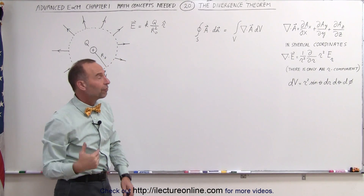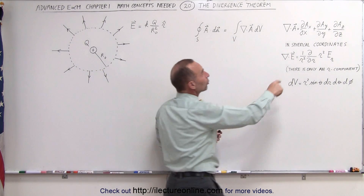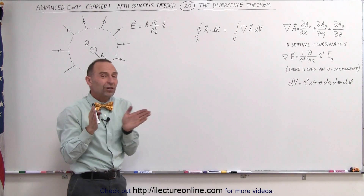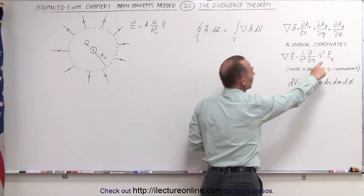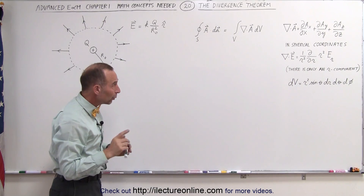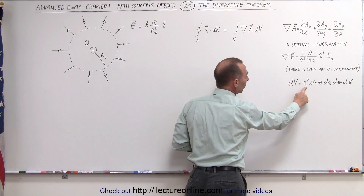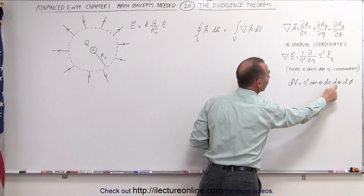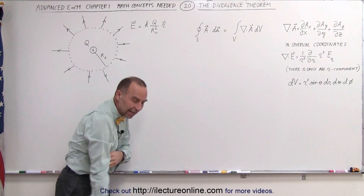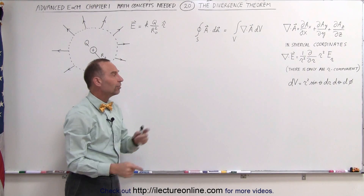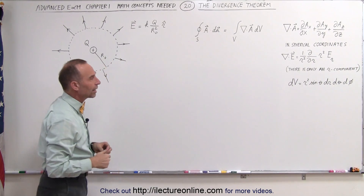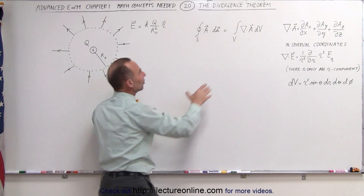We're going to take the divergence of the vector field times dV. In rectangular coordinates we would use one equation, but it makes more sense to do it in spherical coordinates. Since the electric field is directly radially outward, there's only one component — the R component. The theta and phi components are simply zero. We do have to keep in mind that the volume element is R squared times the sine of theta times dR dθ dφ. In spherical coordinates, theta is the angle from the positive z direction down over 180 degrees, and phi is the full 360 degrees in the horizontal direction.